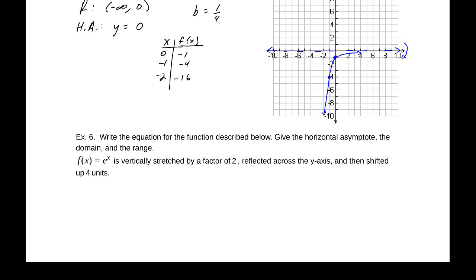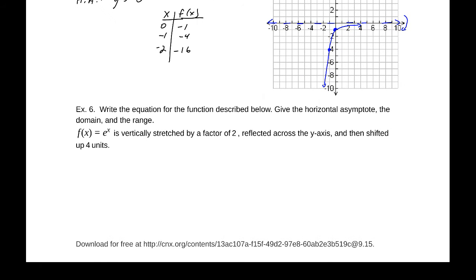Our last question here is to write the equation for this function. Give the horizontal asymptote, the domain and the range. So f(x) = e^x, so we have a base of e, is vertically stretched by a factor of two, reflected across the y-axis, and then shifted up four units. So let's go ahead and put our factor there, e^(x+c) + d, we'll have something of this form.